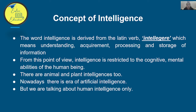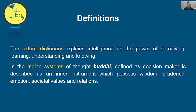We are talking about human intelligence only. If we talk about human intelligence, the Oxford Dictionary explains intelligence as the faculty of perceiving, learning, understanding, and knowing — the ability to learn something, understand something, and apply that knowledge.